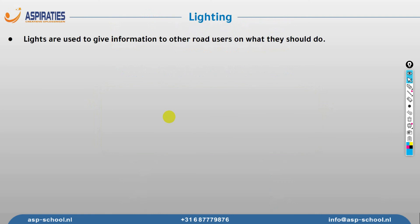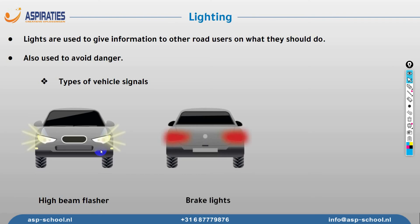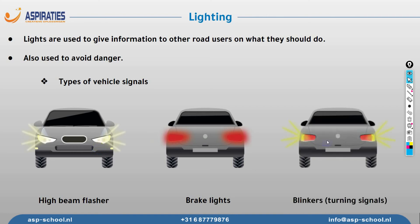First let's talk about lighting. Lights are used to give signals to other road users and to avoid accidents. There are several types of vehicle signals. First, the high beam flashers — if drivers coming from the opposite direction flash high beams, it warns you something dangerous may be ahead. Next, brake lights come on automatically when you press the brakes, signaling to others that you're slowing down or stopping. We also have turning signals and hazard lights — when all turning signals are on simultaneously, it indicates your car may be unable to move.